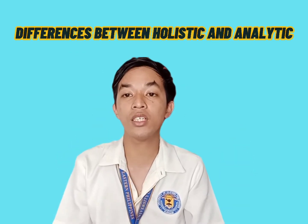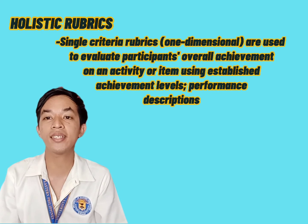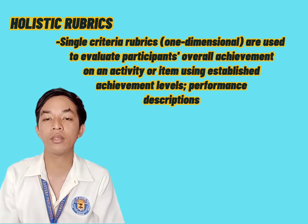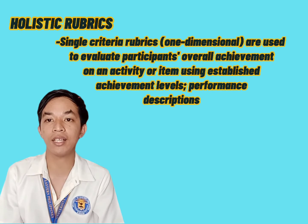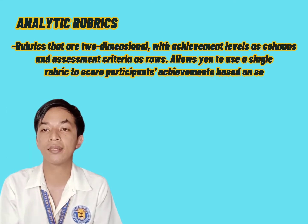What is the difference between holistic and analytic rubrics? Holistic rubrics are single-criteria rubrics, or one-dimensional, used to evaluate participants' overall achievements in an activity or item, with established achievement levels. These two pictures are examples of holistic rubrics: the holistic critical thinking scoring rubric and the holistic rubric for a landscape.